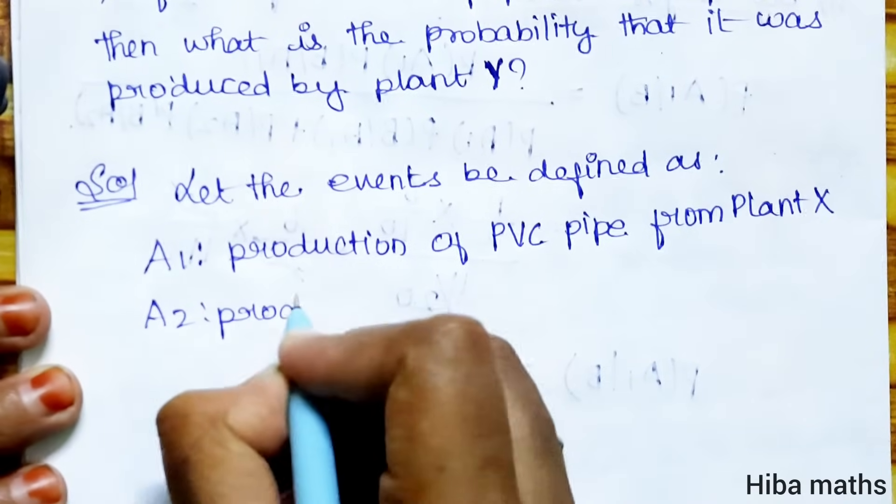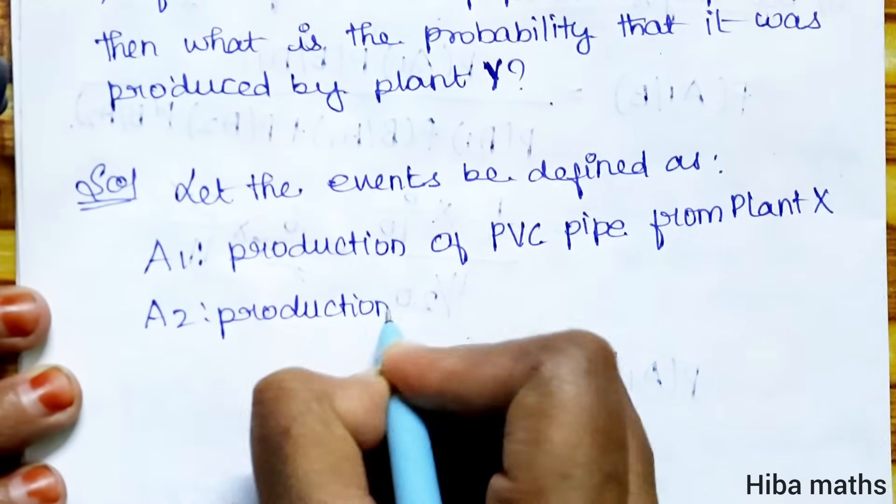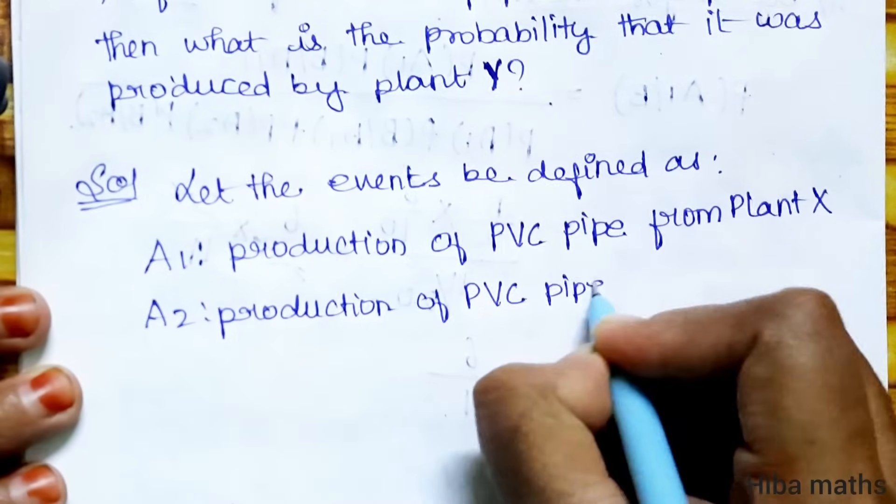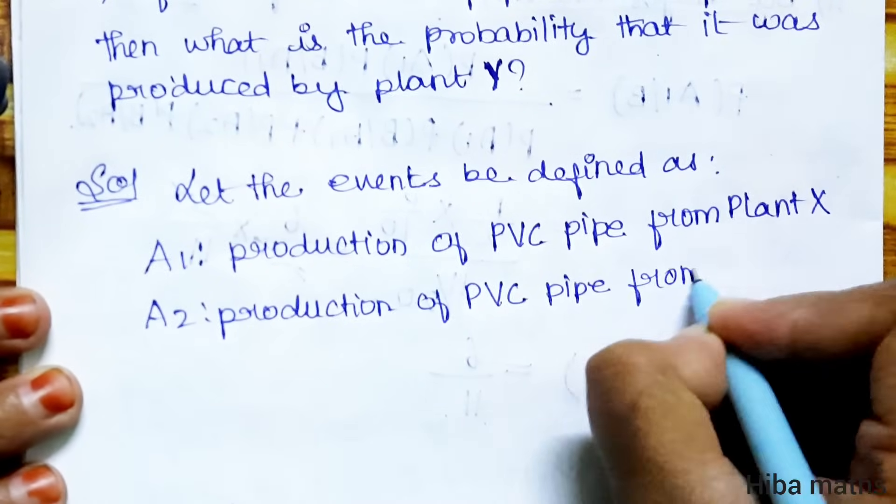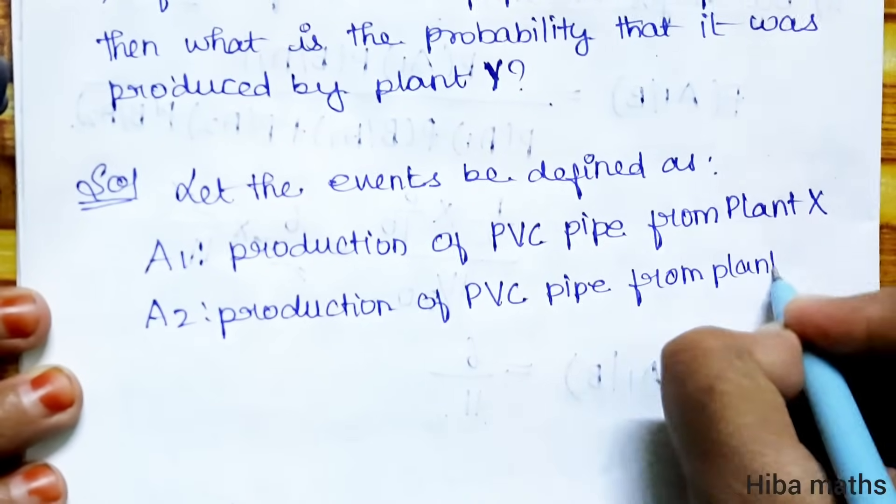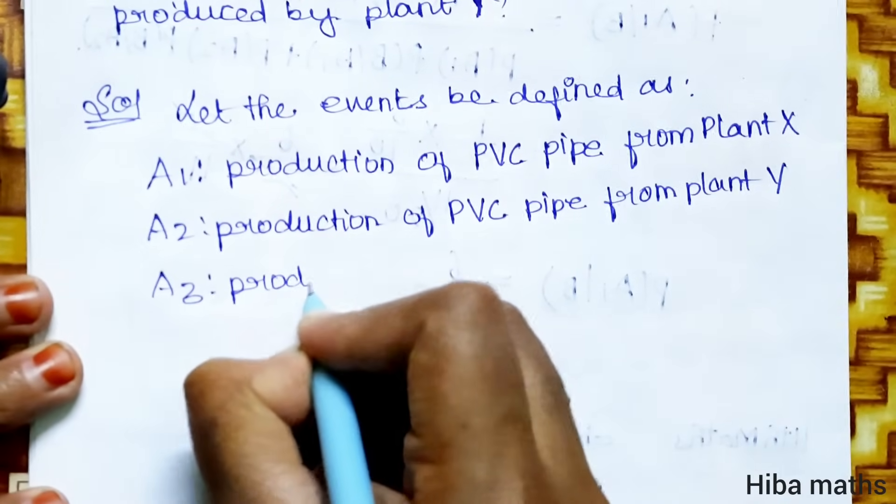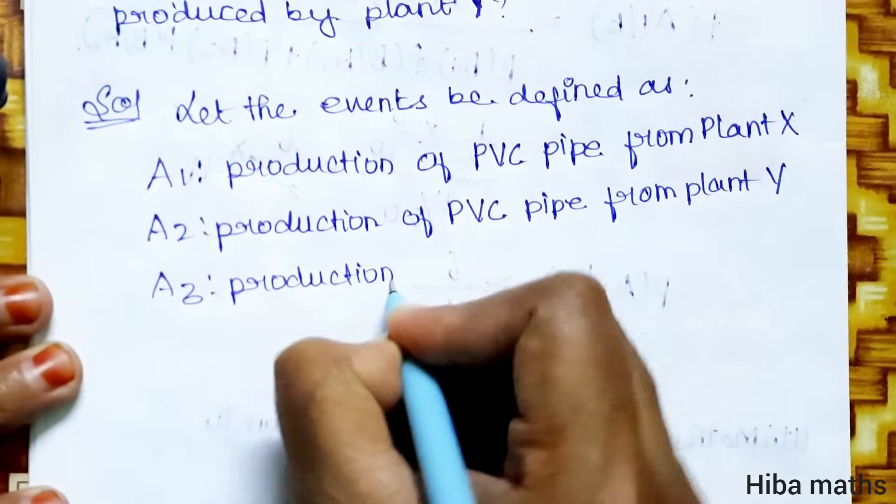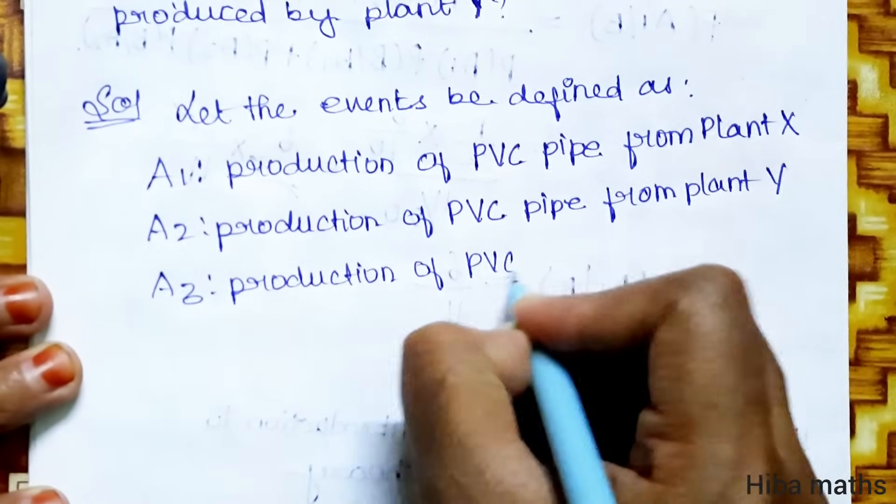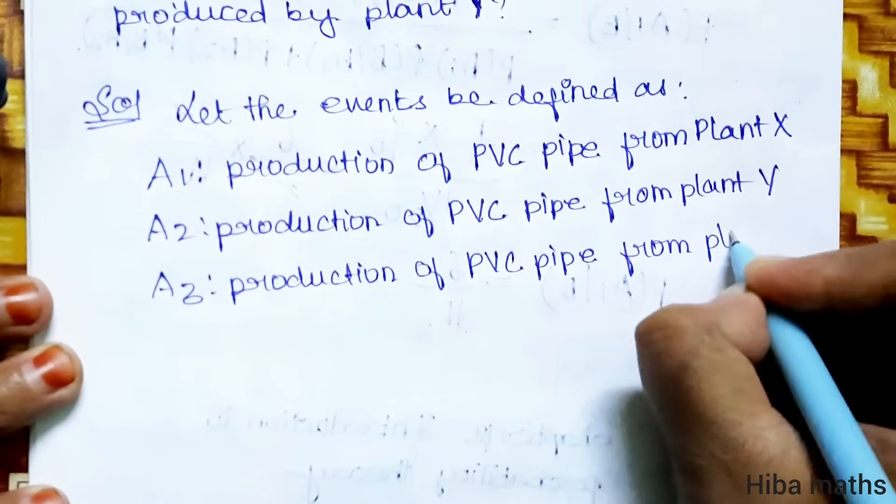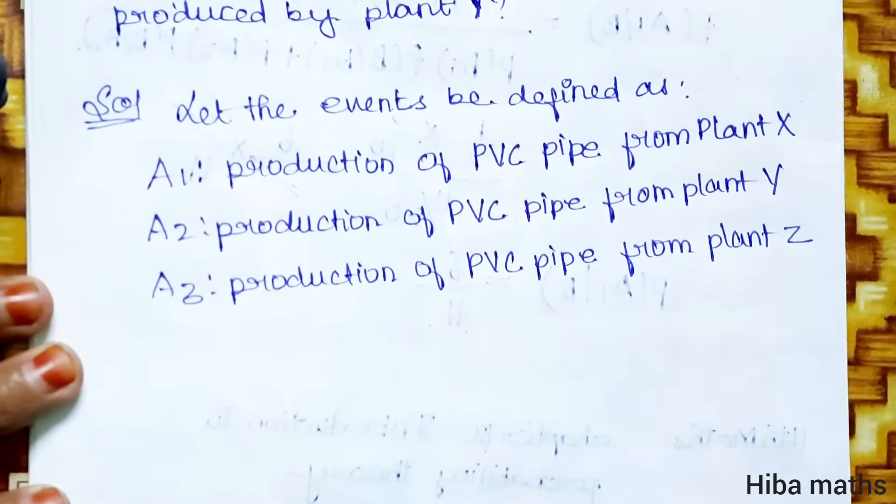Production of PVC pipe from plant Y. A3, production of PVC pipe from plant Z.